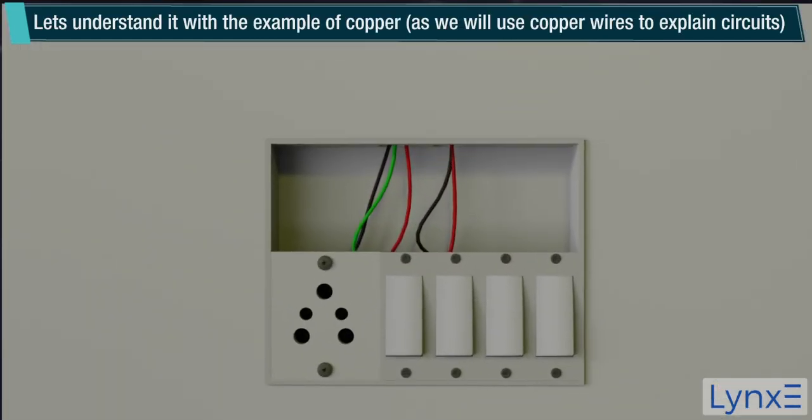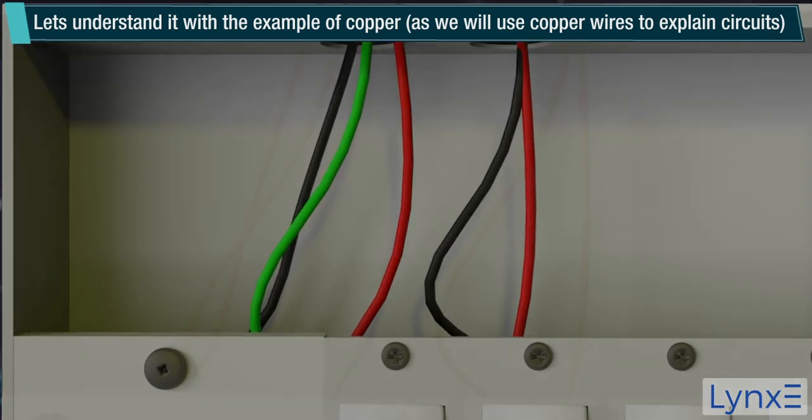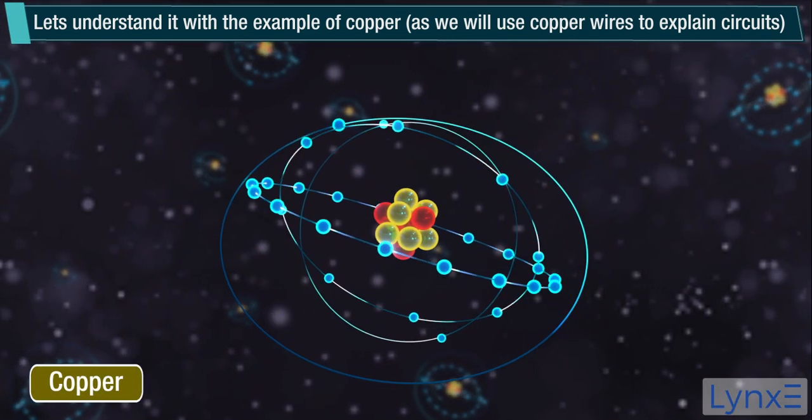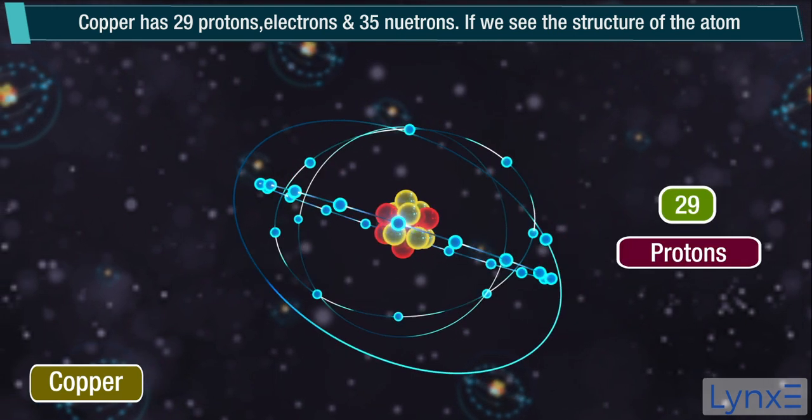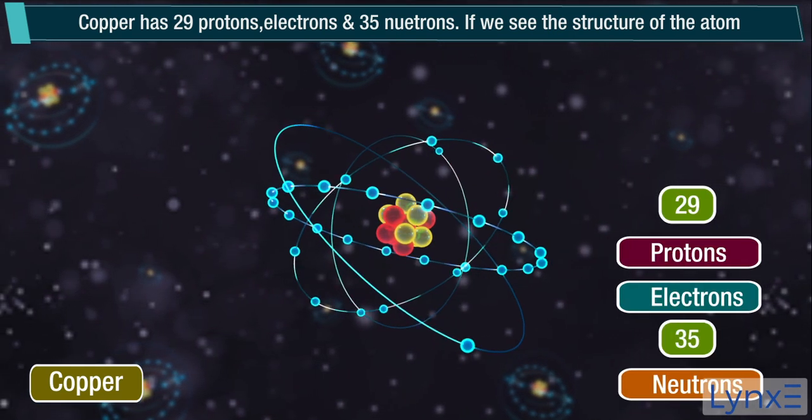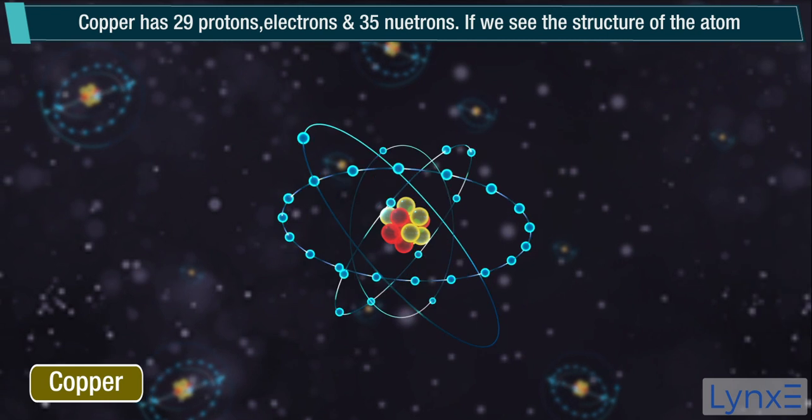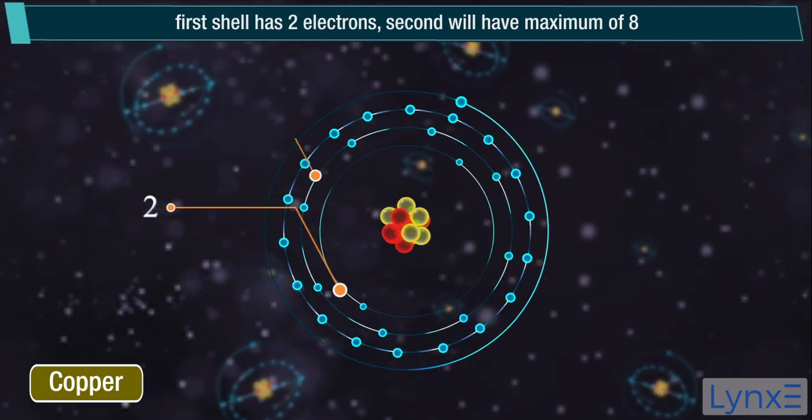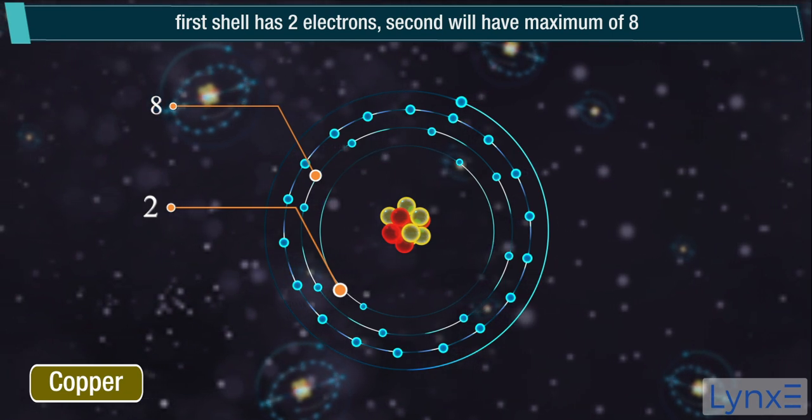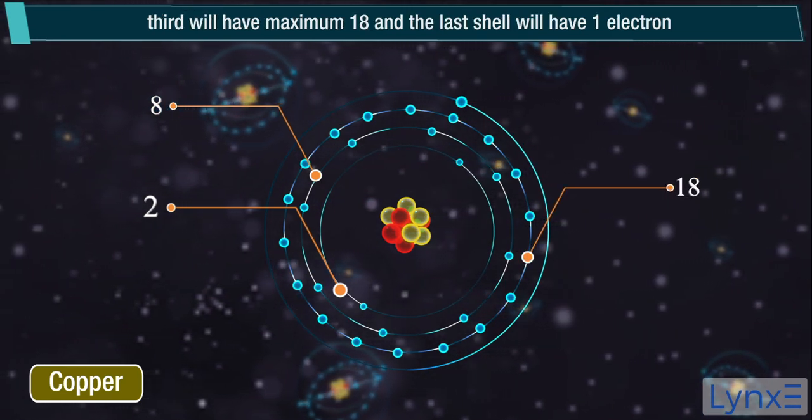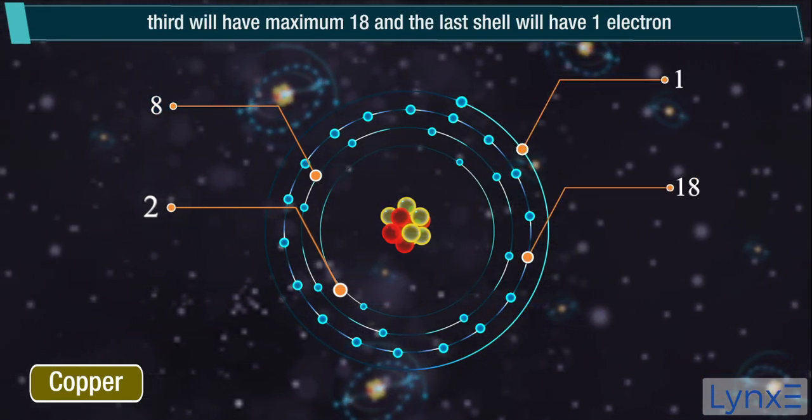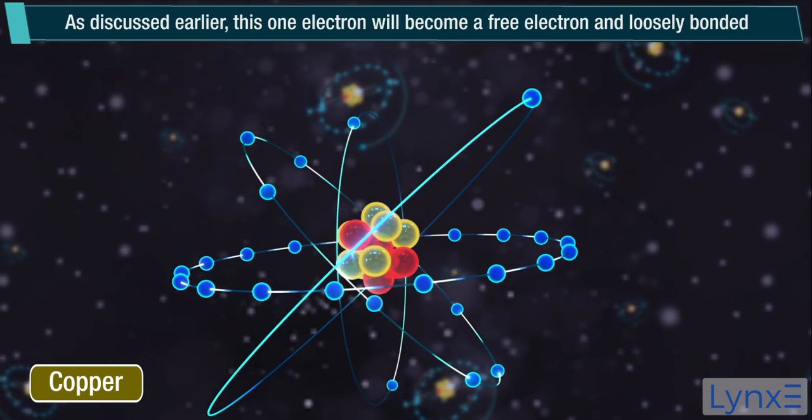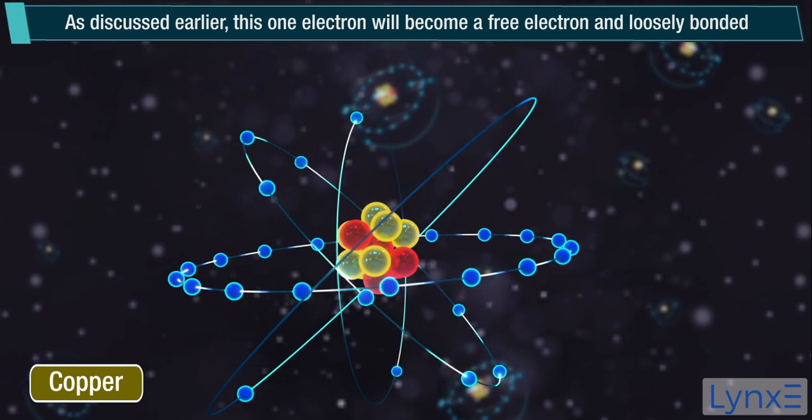Let's understand it with the example of copper, as we will use copper wires to explain circuits. Copper has 29 protons electrons and 35 neutrons. If we see the structure of the atom, first shell has 2 electrons. Second will have maximum of 8, third will have maximum 18, and the last shell will have 1 electron. As discussed earlier, this 1 electron will become a free electron and loosely bonded.